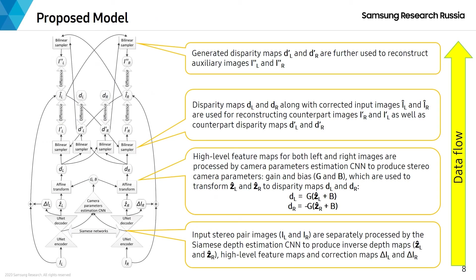Here is the diagram of our proposed model. First, input stereo pair images are separately processed by the Siamese depth estimation CNN to produce inverse depth maps, high-level feature maps, and correction maps, which are added to the input images.